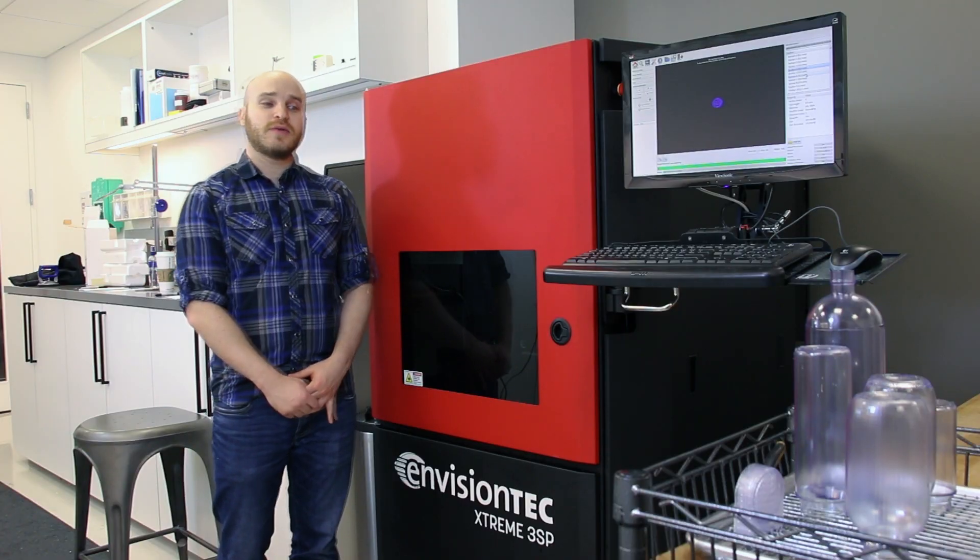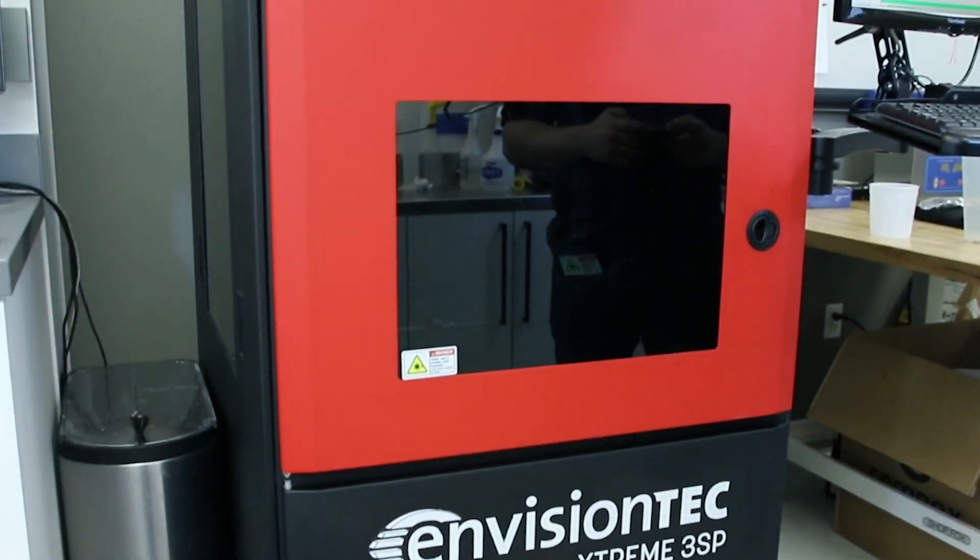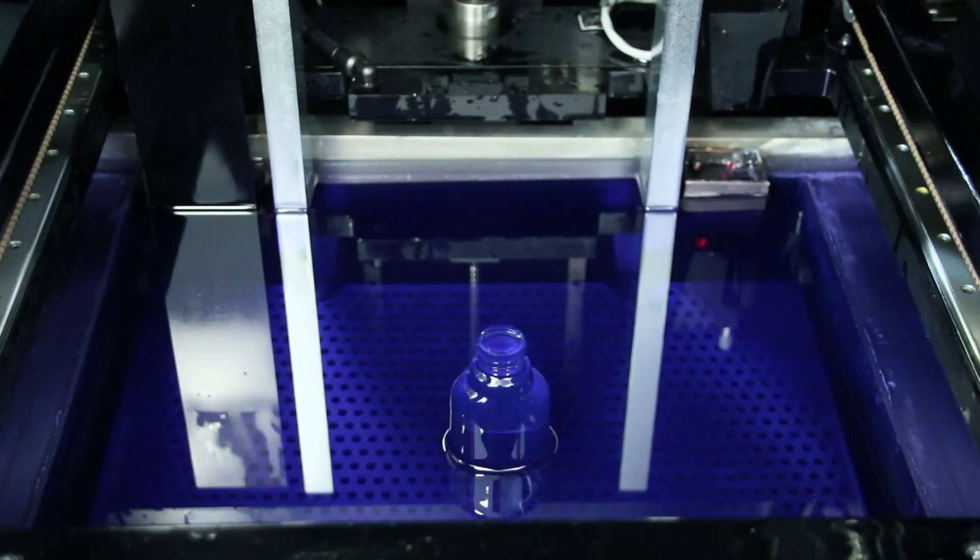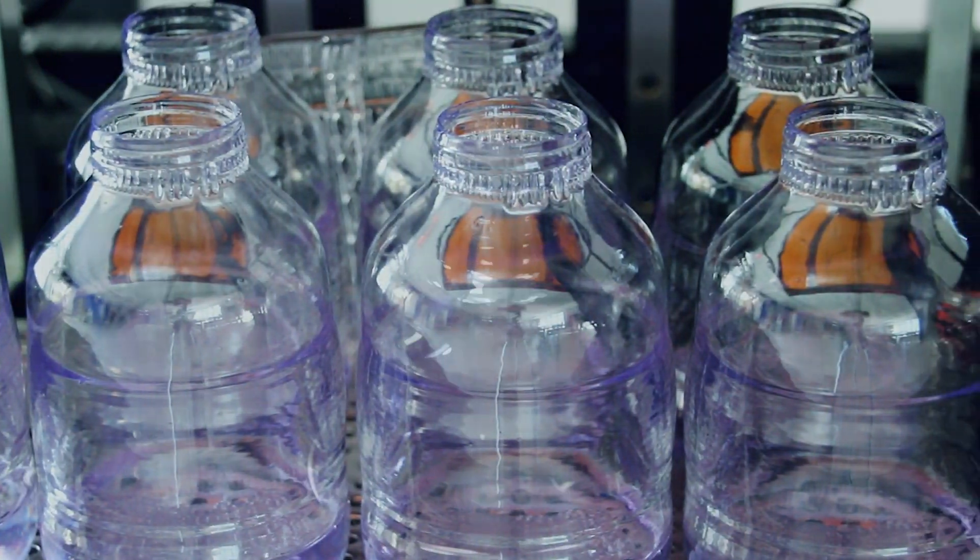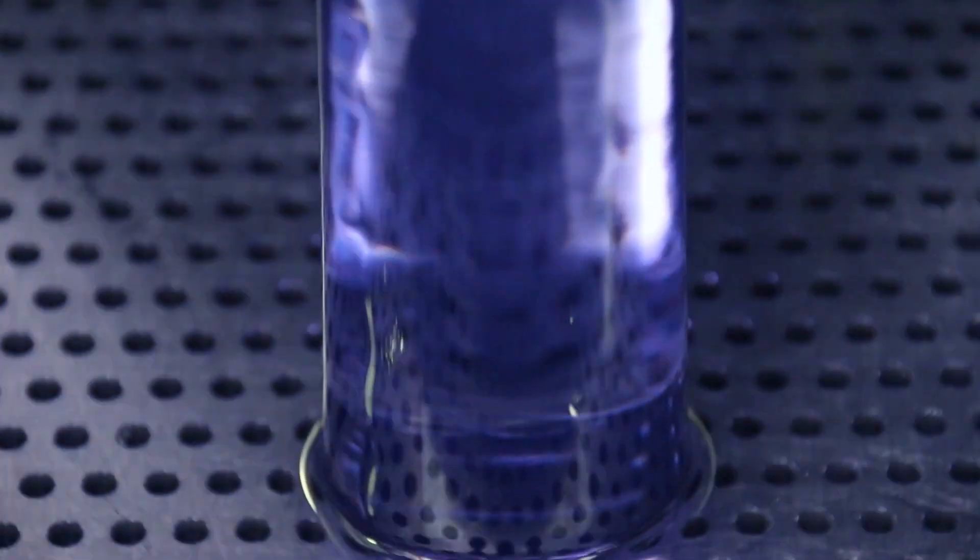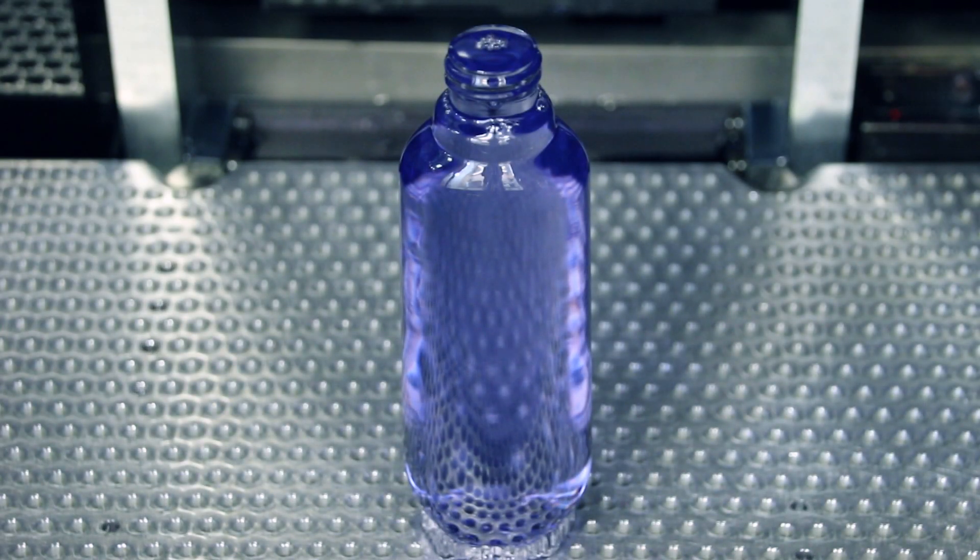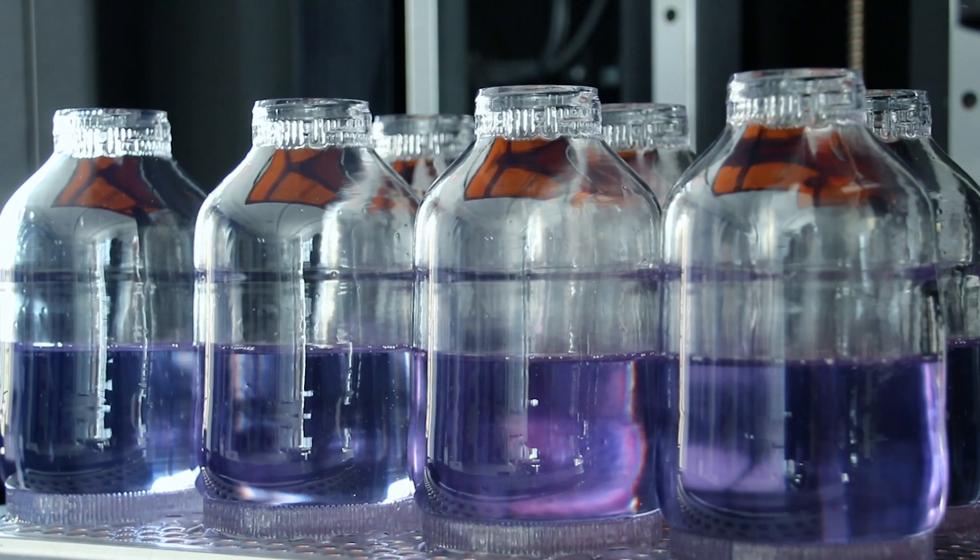We print essentially six to seven days a week. The reason we picked the Xtreme 3SP was because it has a large build envelope. We're able to build multiple bottles at the same time, with bottles that have gone up to 12 or 13 inches in height. It's nice to be able to meet multiple deadlines in one build.